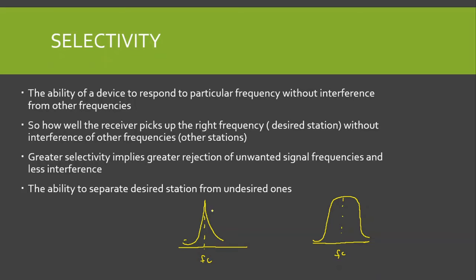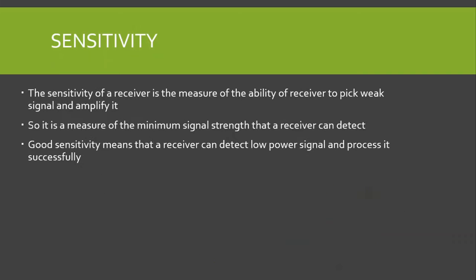The selectivity of the first filter is greater because it is able to pick up the desired frequency signal and reject other interfering frequency signals better. The second filter also picks up the desired frequency signal, but it is not able to suppress or reject the other frequency signals — so we have interference. That is why the second filter has poor selectivity, and the first filter has good selectivity.